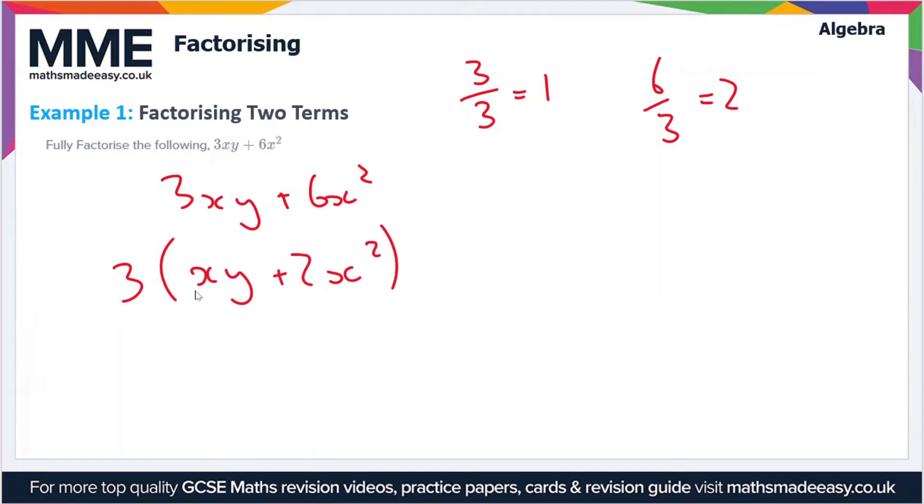And now let's look for something that's common to both the terms xy and 2x squared. The only thing that's common to both of these is x. So we'll take out a factor of x again. So what are we going to be left with?